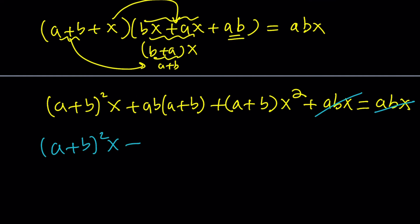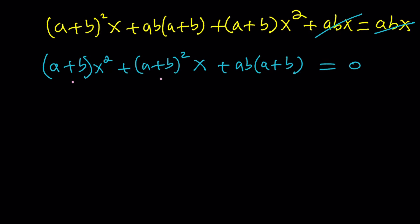Now we get a plus b quantity squared x plus ab times a plus b plus a plus b x squared. Maybe I should write it as a quadratic first. So let's write this one first: a plus b x squared. And then the x term, the coefficient of x is a plus b squared. And the constant term is ab multiplied by a plus b. And of course, the whole thing is equal to zero, which makes this a full quadratic. Before that though, there's something you can factor out. Notice that a plus b is a common factor. So we can take it out. Then inside, we have x squared plus a plus b times x, because one of the a plus b's is outside, plus ab equals zero.